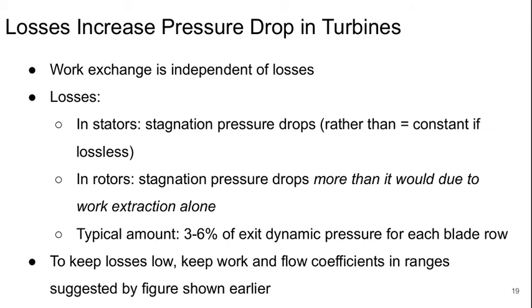Typically, this would be something like 3% to 6% of the exit dynamic pressure for each blade row. To keep the losses low, we need to keep our work and flow coefficients in the ranges suggested by the Smith chart earlier.